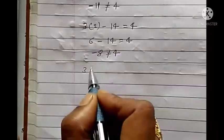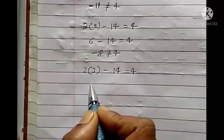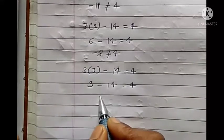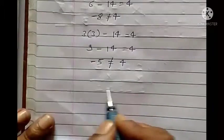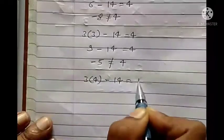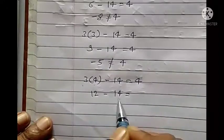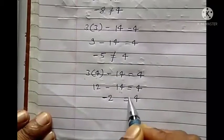Next we put m equals to 5: 5 threes are 15. 15 minus 14 equals 1, but this is not equal to 4.